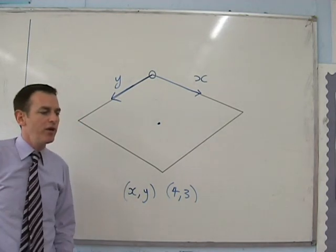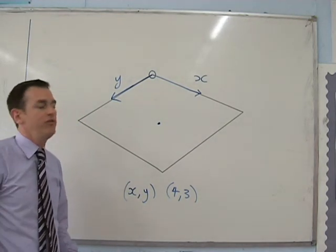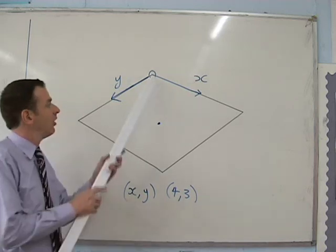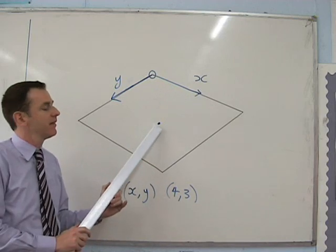If we want to describe where an ant walking on the classroom floor is, we only need to use two coordinates, x and y, that tells how far along and how far across the ant is.